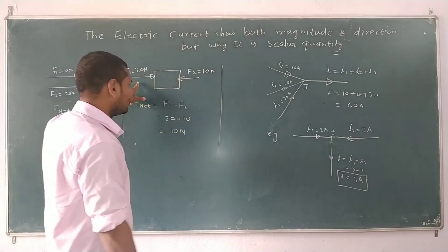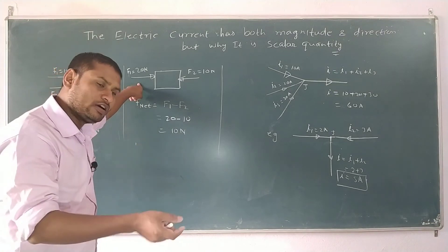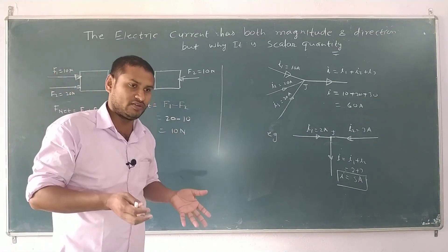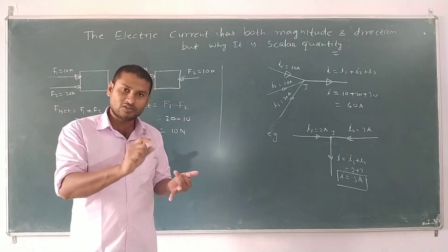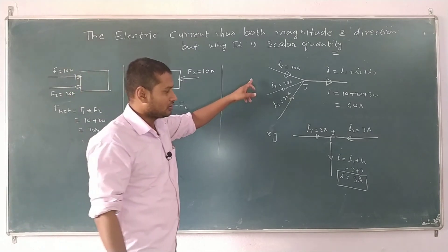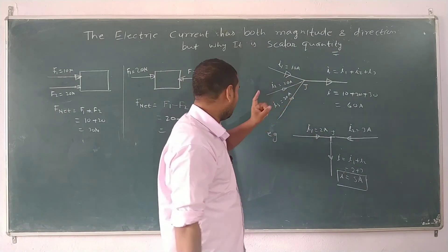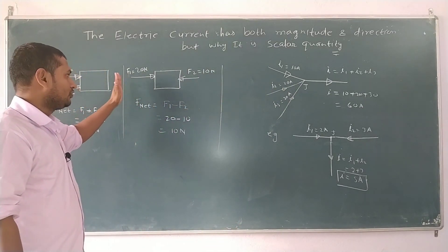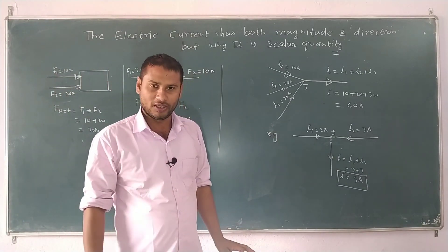Force is a vector quantity — a physical quantity having both magnitude and direction and also following the vector law of addition. But if a physical quantity has magnitude and direction yet does not follow the vector law of addition, it is not a vector quantity — it is a scalar quantity. So current does not follow the vector law of addition, while force does. That is why force is a vector quantity and current is a scalar quantity. Thank you.